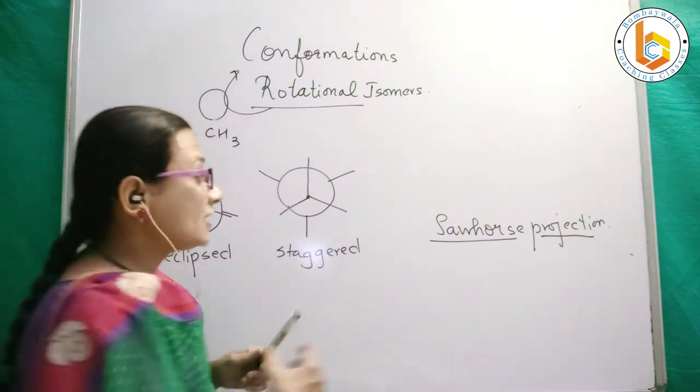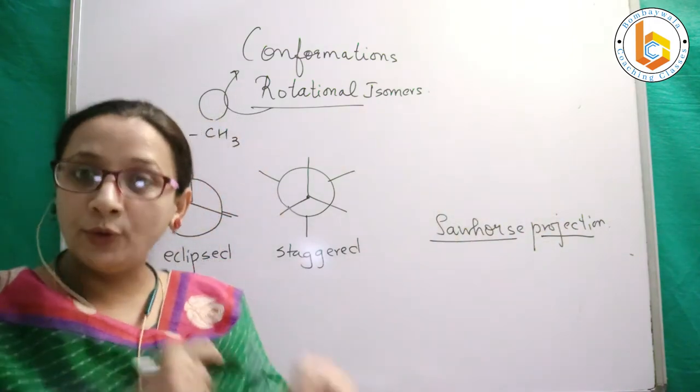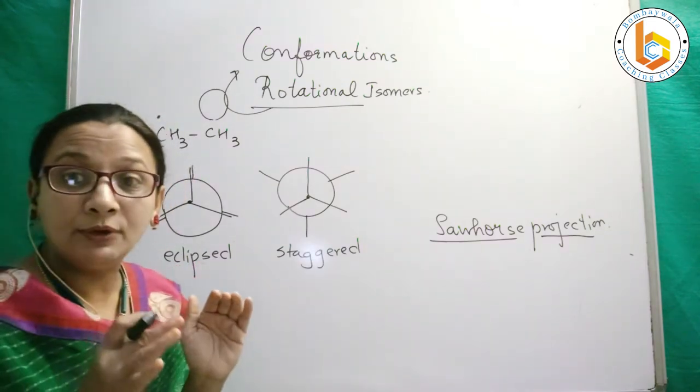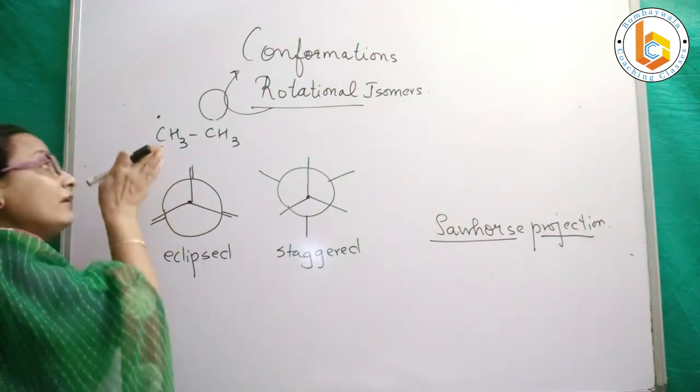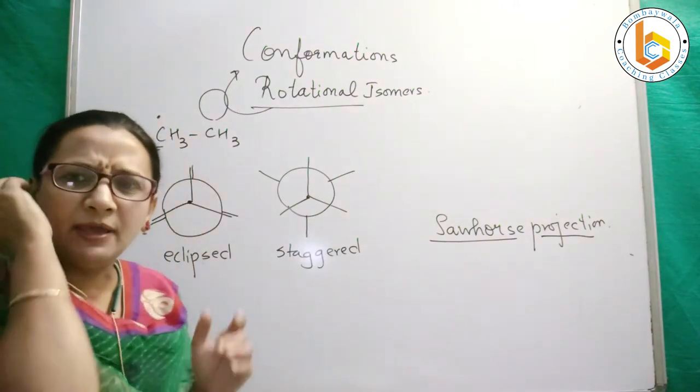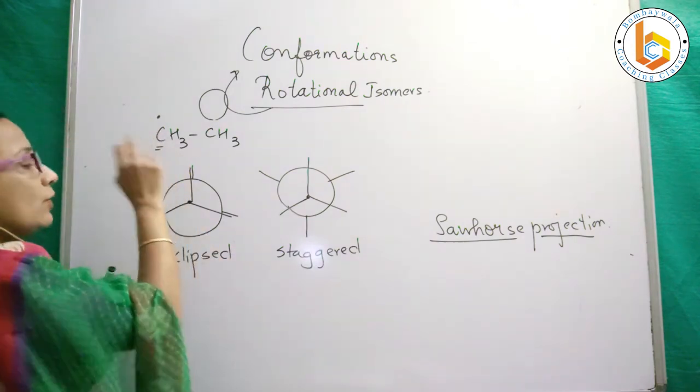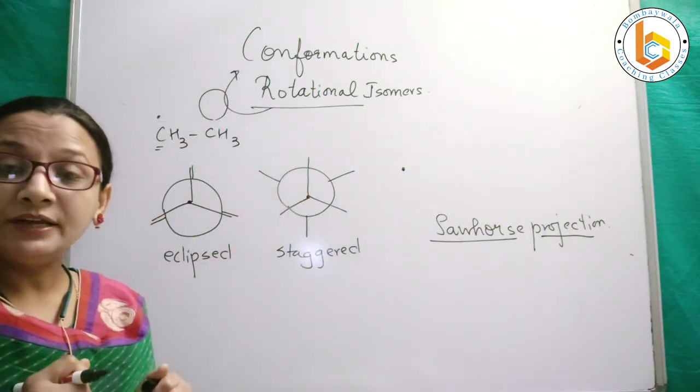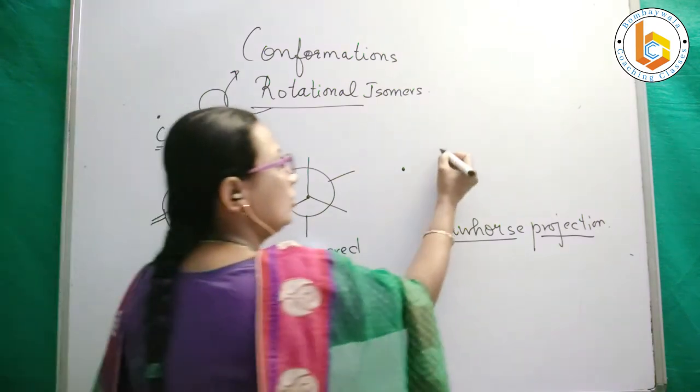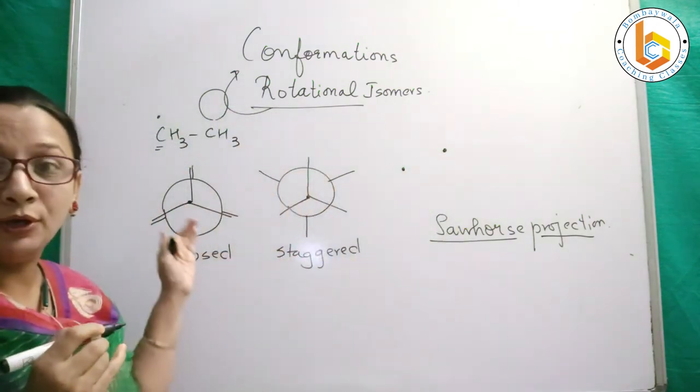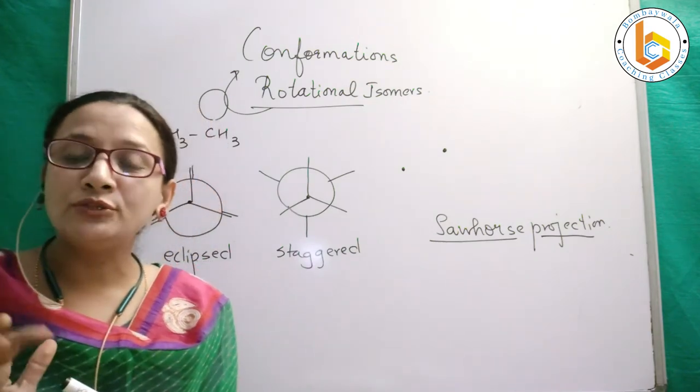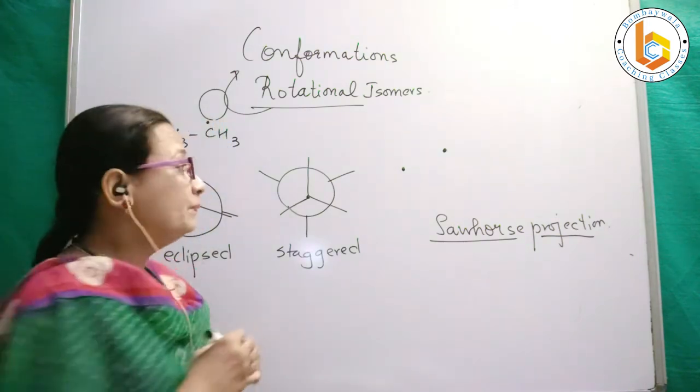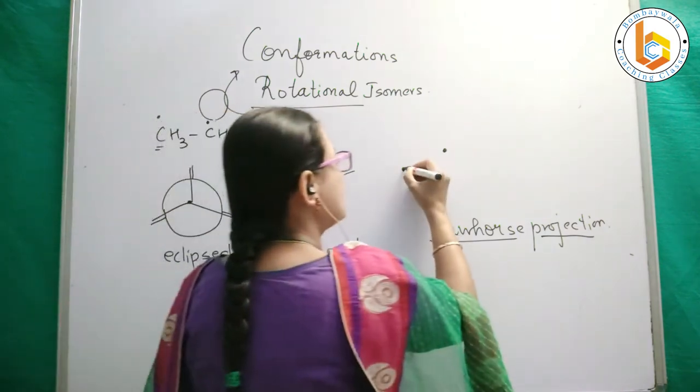In sawhorse projection, you view the carbons in a particular way—one carbon is in front and one is behind. The carbon you see in front is represented as a dot, and the carbon behind is also represented as a dot. The line that joins them is the carbon-carbon bond.